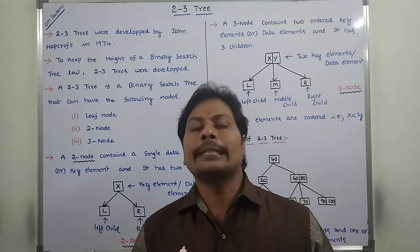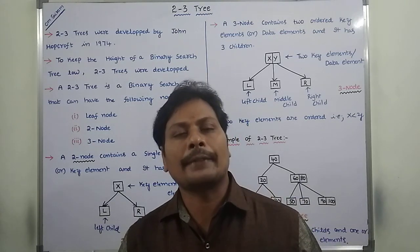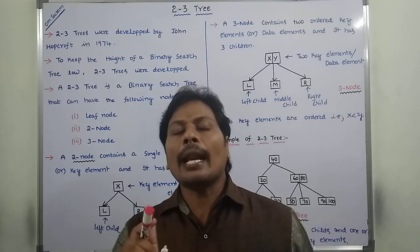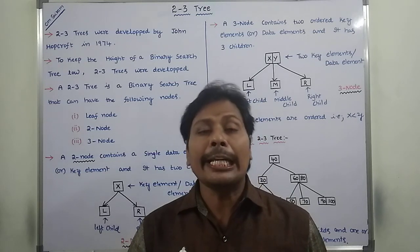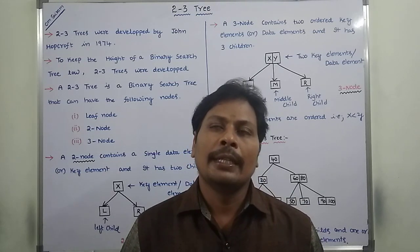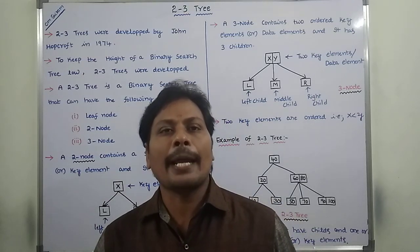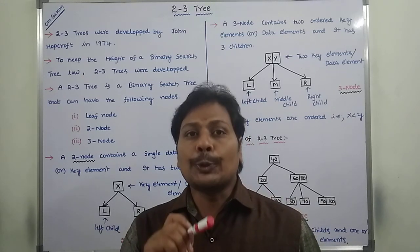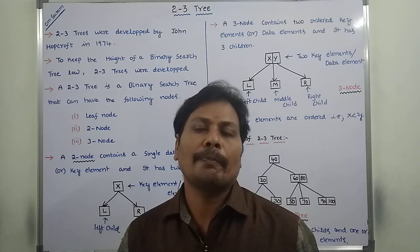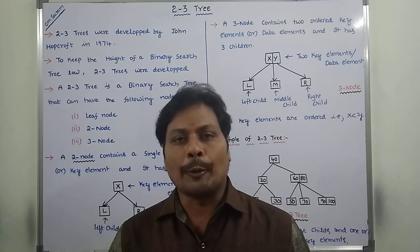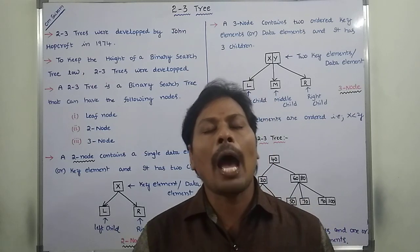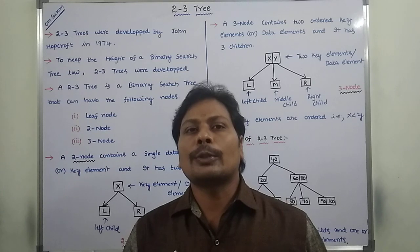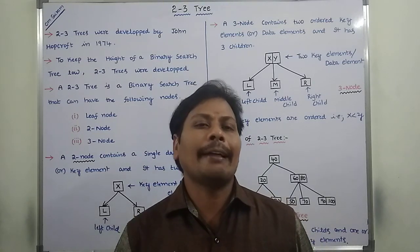The 2-3 Tree was developed by John Hopcroft in 1974. Generally, a 2-3 Tree is a height-balanced Binary Search Tree. It contains three types of nodes: the first is a leaf node, the second is a two node, and the third is a three node. A leaf node does not have any children and it has one or two data elements.